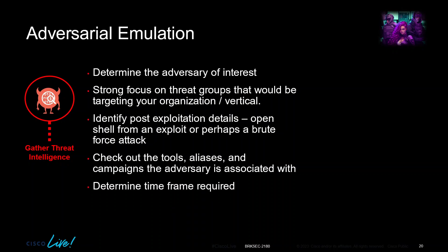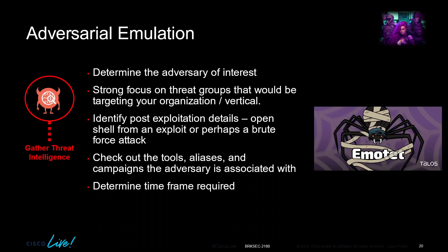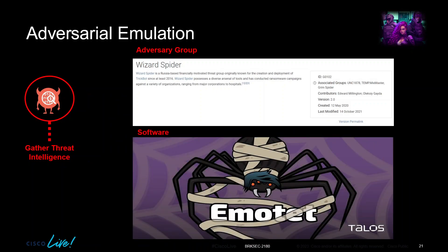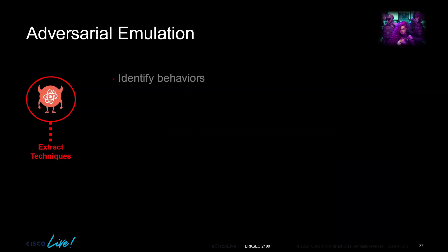Emotet is an example of software an adversary might use — in fact, Wizard Spider uses Emotet. Wizard Spider is a Russian-based, financially motivated threat group known for the creation and deployment of TrickBot. They have a diverse arsenal of tools, conduct ransomware campaigns against many organizations, and don't limit themselves to major corporations — they also target hospitals. Understanding a group like this helps us really understand the adversary and their capabilities.